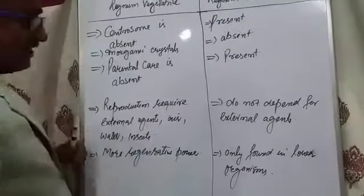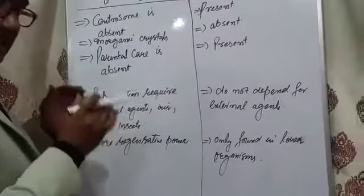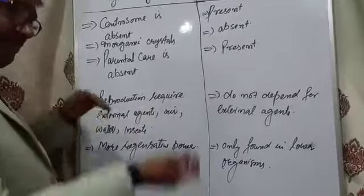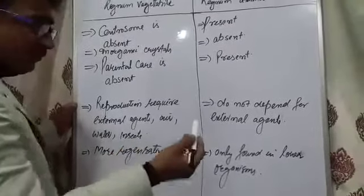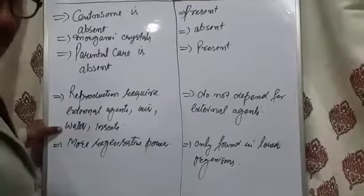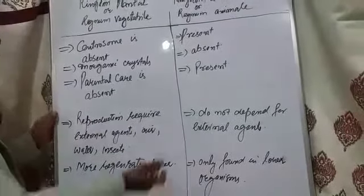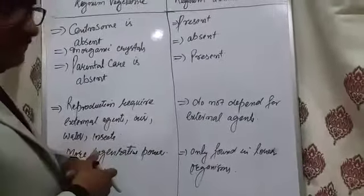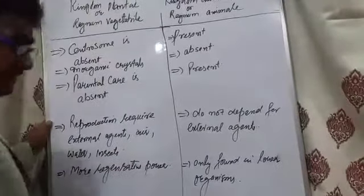In case of reproduction, Kingdom Plantae requires special external agents for carrying their pollen grains from one plant to another for cross-pollination — that is they require air, water, and insects. Insects carry pollen grains from flower to flower, or water carries sperm from one plant to another in case of bryophytes. But in Kingdom Animalia they do not need such external agents, as they are mostly cross-breeding organisms.